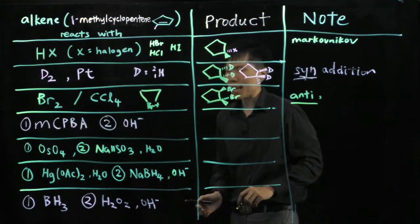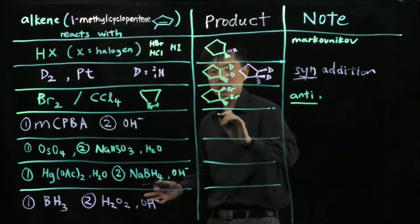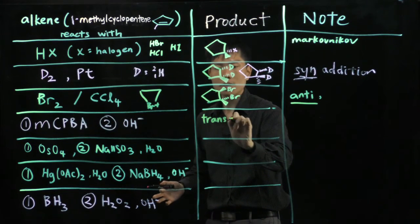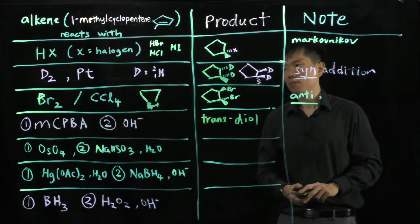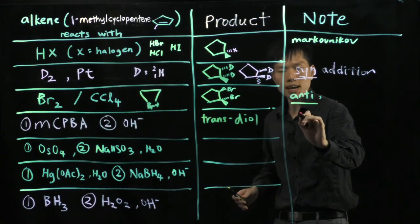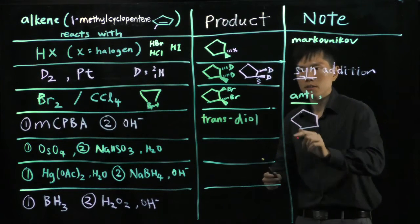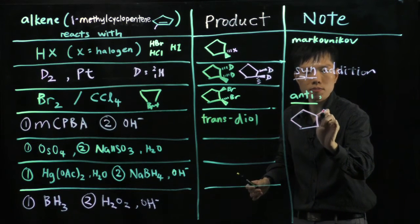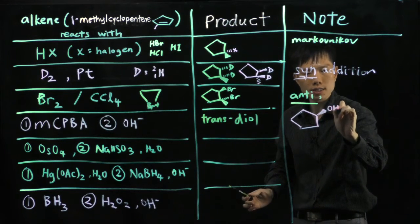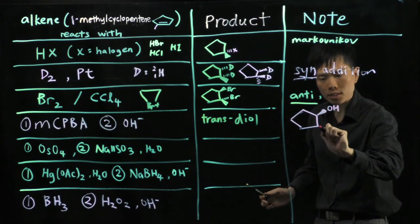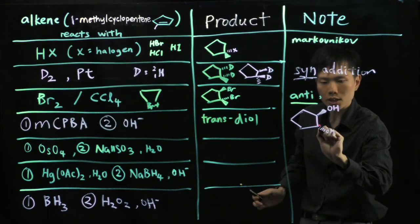Next, we have MCPBA, a peroxy acid, followed by hydroxide. This is where you get a trans-diol. Remember, to make a trans-diol, stick to MCPBA and hydroxide. So take a look, the product will be the alcohol. So again, because it is a trans-diol, so OH pointing to you, the other OH must point away from you. That means the methyl group must point to you.